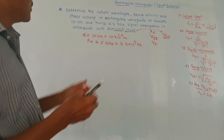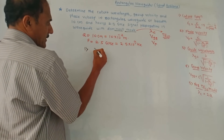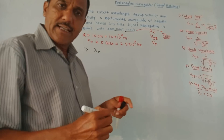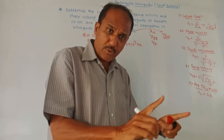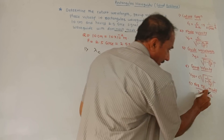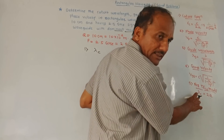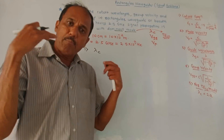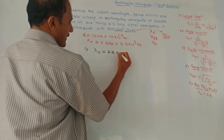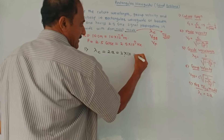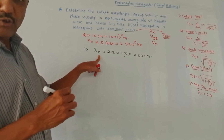Now let us do the calculations. First part: we have to calculate the cutoff wavelength. The notation is lambda c. It is dominant mode, so for TE10 mode we have a ready-made formula: cutoff wavelength lambda c equals 2 times a. So it is 2 × 10 centimeters, which equals 20 centimeters. This is the value of lambda c.